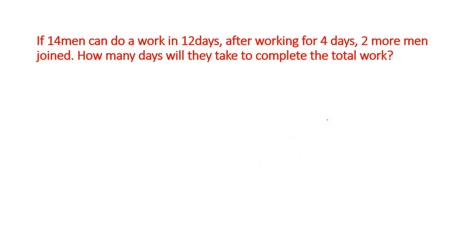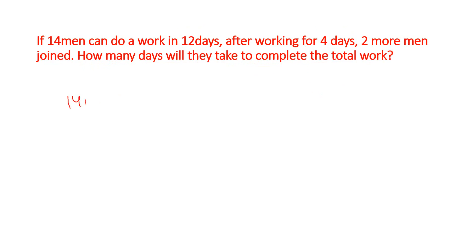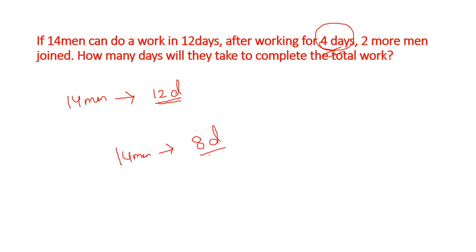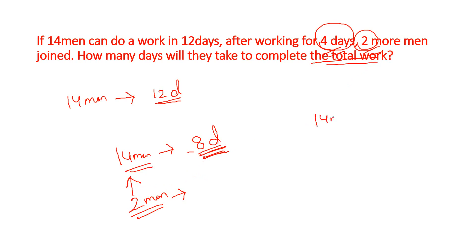Next question: if 14 men can do a work in 12 days, after working for 4 days 2 more men joined — how many days will they take to complete the total work? In 4 days, 14 men complete 4/12 of the work. The remaining work is 8/12 = 2/3. Now 16 men complete the remaining work. That is 7 days remaining.